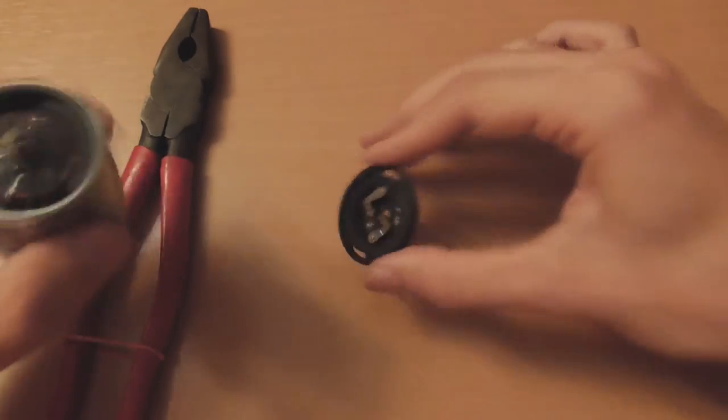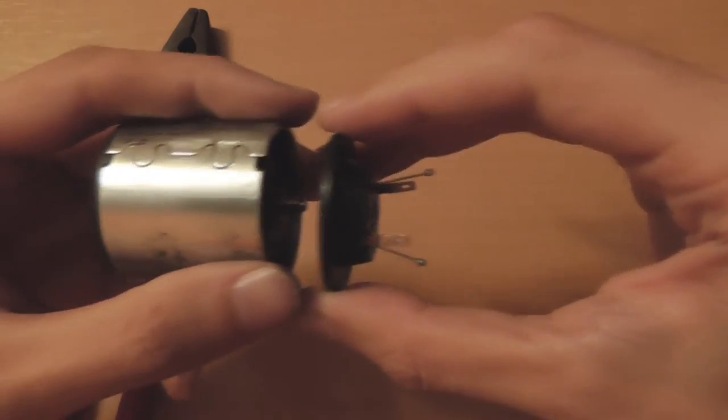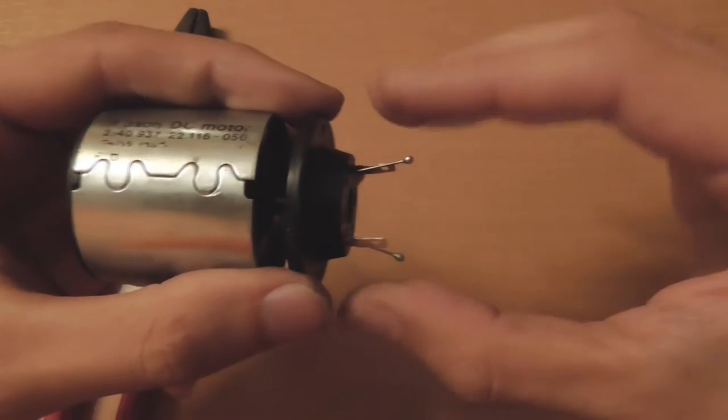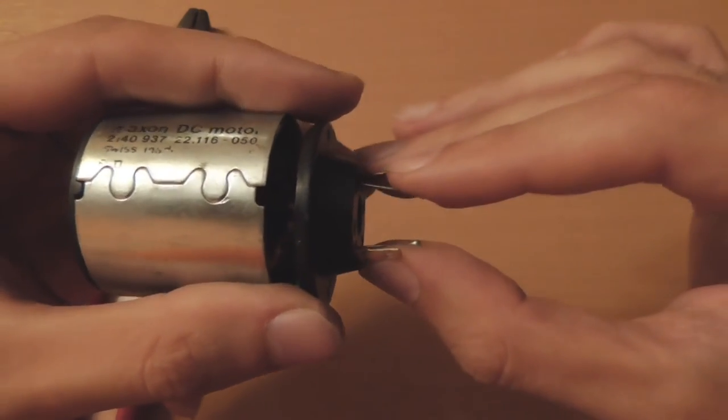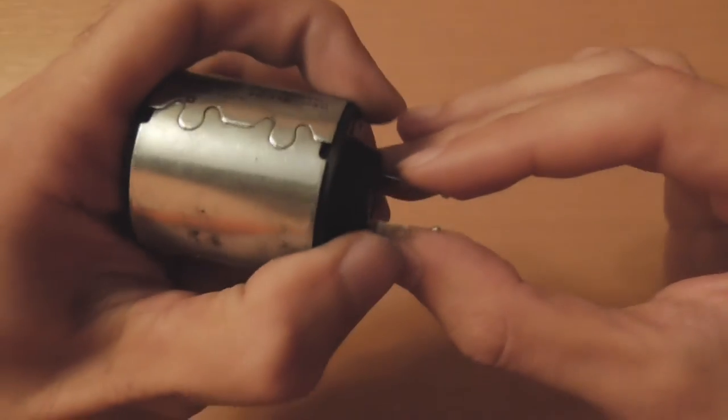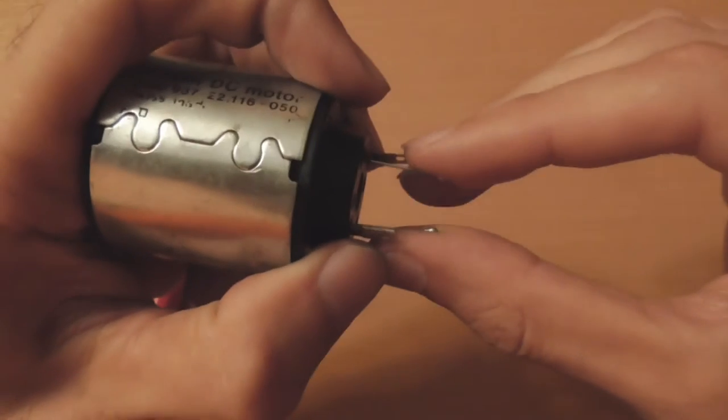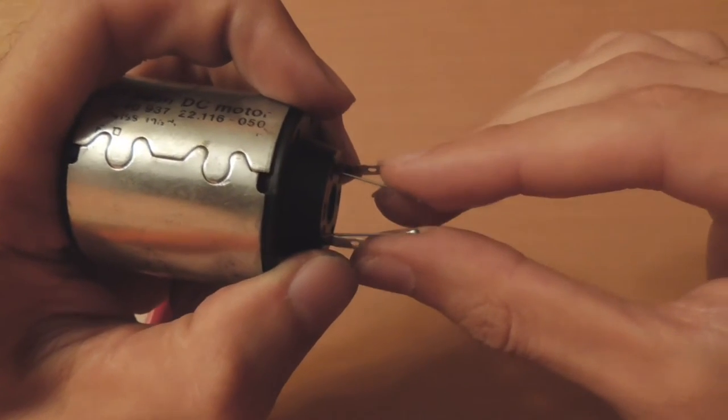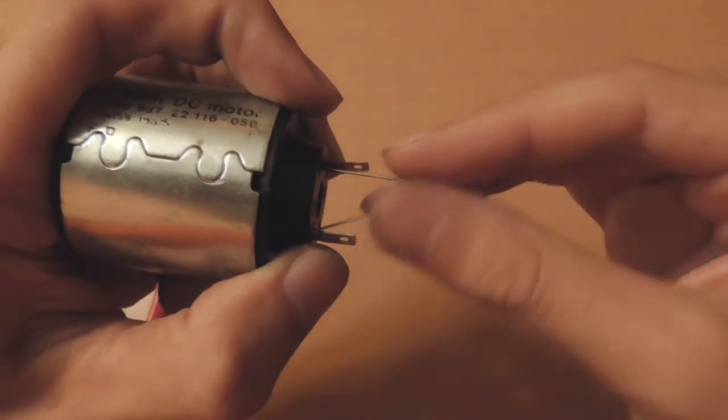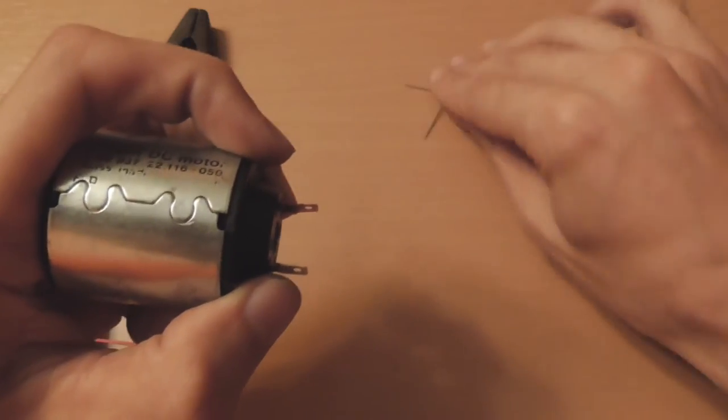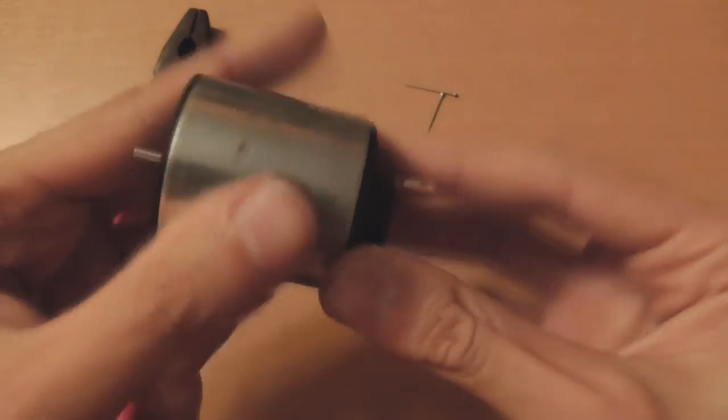And now to reassemble the motor, I'm going to align the parts like so, apply tension on the pins, push this in, and the pins feel loose now because the brushes are touching the commutator. They can easily be taken out now, and the motor has been reassembled.